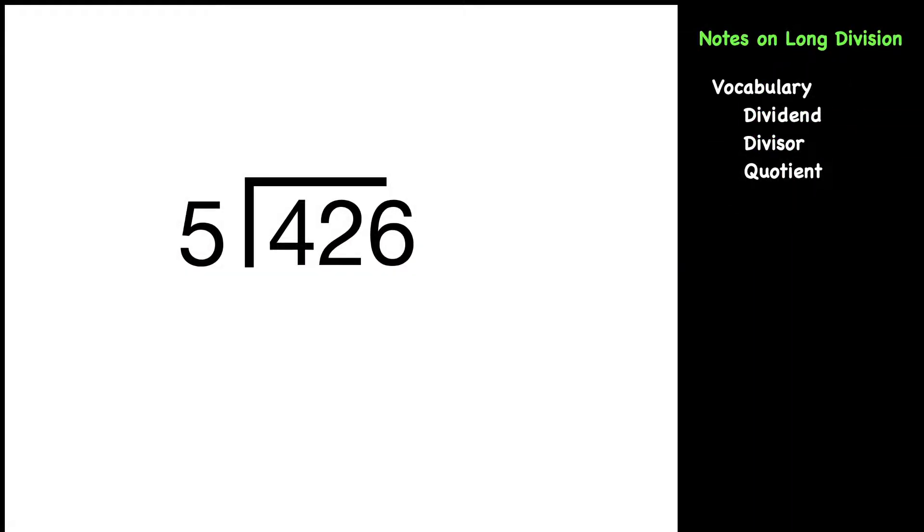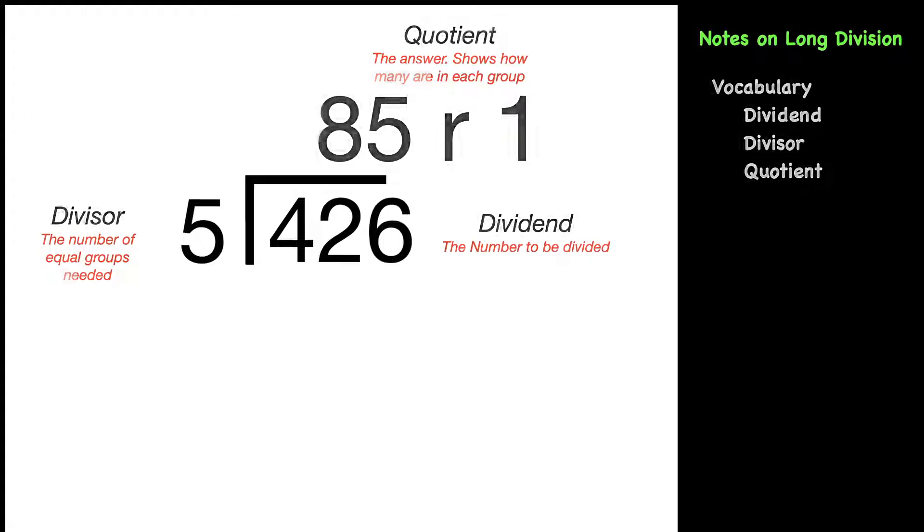Our vocabulary, let's start with our dividend. That is the big number in the brackets and that is the number that we are going to divide into equal groups. The five on the left is the divisor and that is the number of equal groups that we need for this particular problem. The answer is called the quotient and that goes on top and that shows how many are in each group.